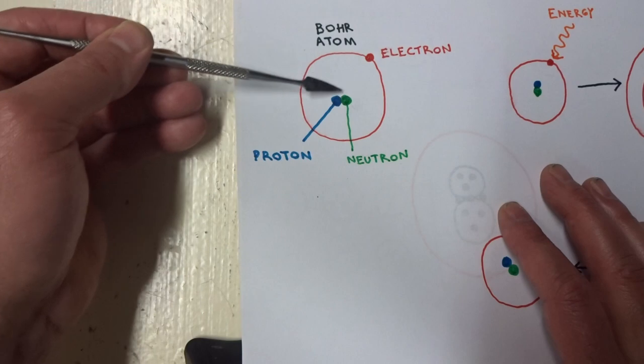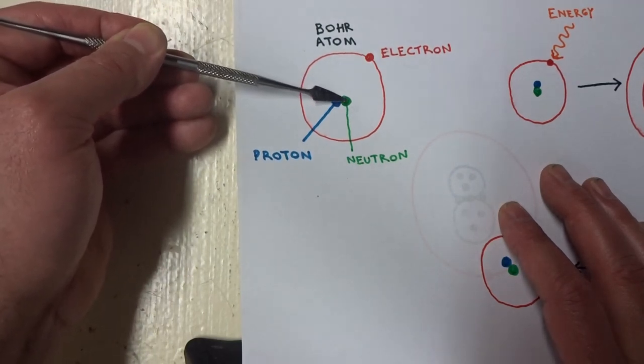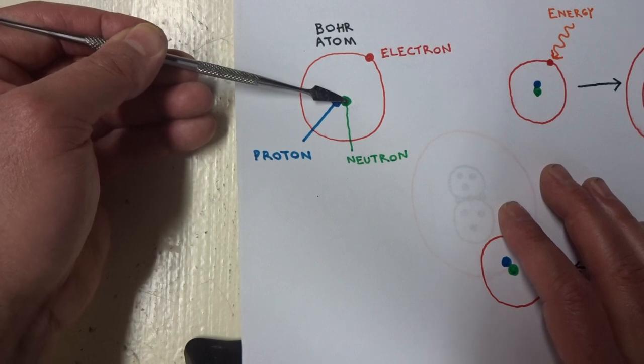The electron, the proton, and the neutron are subatomic particles. They are smaller than the atom. They are constituents of the atom.